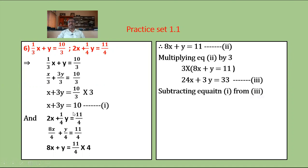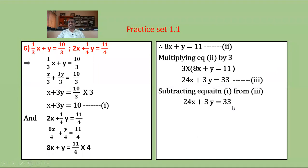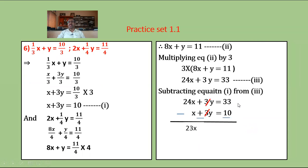From equations 3 and 1, the y coefficient is the same. Subtract equation 1 from equation 3. Equation 3: 24x plus 3y equals 33; equation 1: x plus 3y equals 10. Subtracting, plus 3y minus 3y gets 0, and 24x minus x equals 23x equals 33 minus 10 equals 23. So x equals 23 upon 23 equals 1. Therefore x equals 1.